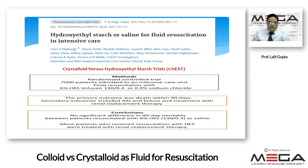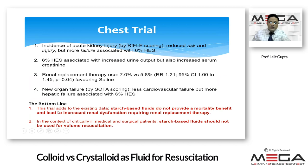At that time, 10% pentastarch was questionable and newer starches came into focus. Then came the very famous CHEST trial — hydroxyethyl starch versus saline for fluid resuscitation — which compared 6% Voluven (the latest HES) with 0.9% sodium chloride, measuring outcome at 90 days. The conclusion was no significant difference in 90-day mortality. However, patients resuscitated with HES were more likely to require renal replacement therapy, meaning HES was a culprit for renal impairment. The bottom line of the CHEST trial: starch-based fluids do not provide a mortality benefit and lead to increased renal dysfunction requiring RRT.